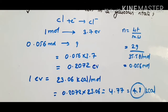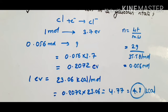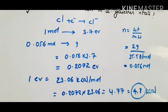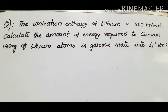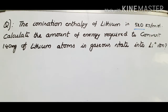If the question asks to calculate in kilojoules, you multiply by 96-point-something (since 1 eV = 96.5 kJ/mol). Now let's move to another example: the ionization enthalpy of lithium is 520 kilojoules per mole — calculate the amount of energy required to convert 140 mg of lithium atoms in gaseous state into Li⁺ ions.